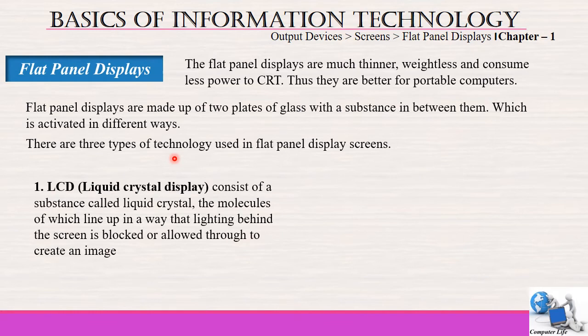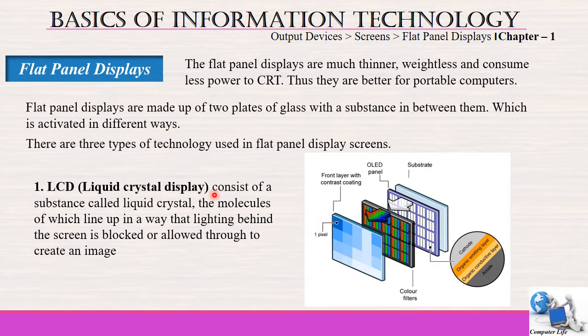The first is LCD, which means liquid crystal display. It consists of a substance called liquid crystal, the molecules of which line up in a way that light behind the screen is blocked or allowed through to create an image. Please see in the diagram the structure of the LCD where color filters and cathode layers and substrates are attached to one another to produce an image on the screen.